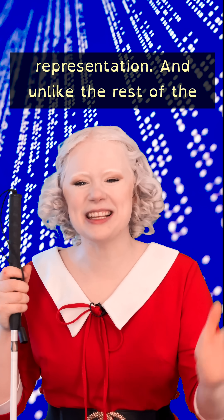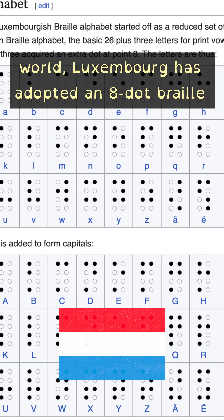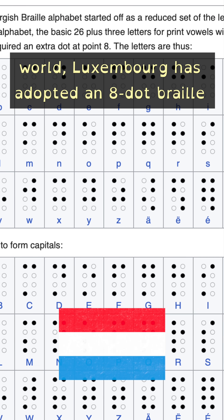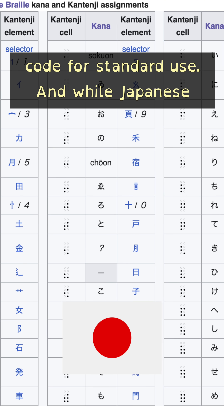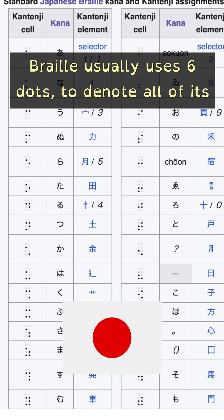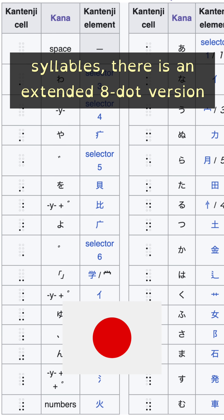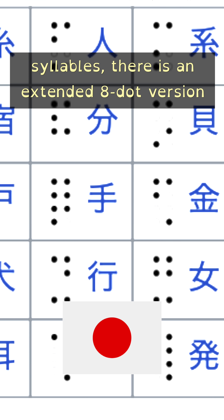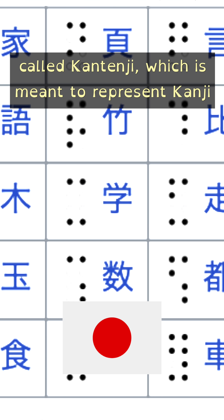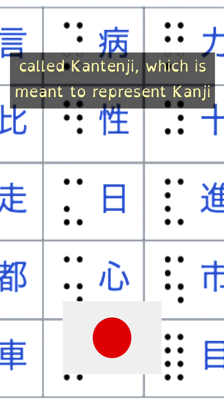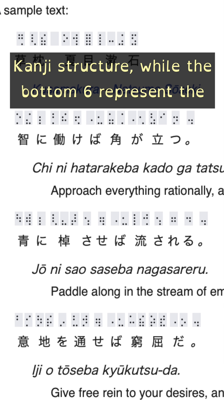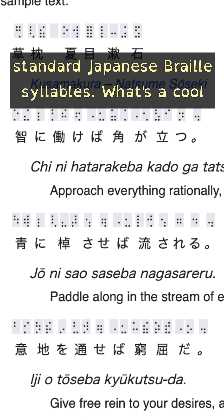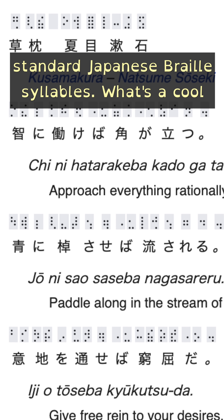Unlike the rest of the world, Luxembourg has adopted an eight-dot Braille code for standard use. And while Japanese Braille usually uses six dots to denote all of its syllables, there is an extended eight-dot version called katenji, which is meant to represent kanji characters. The top two dots are used to denote kanji structure, whereas the bottom six represent the standard Japanese Braille syllables.